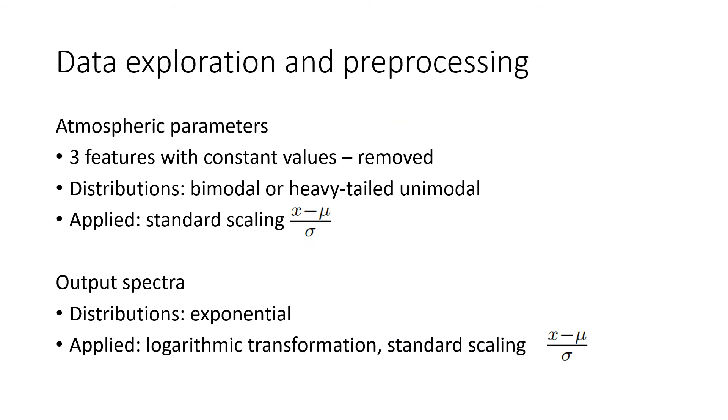In our initial exploration of the dataset, we noticed that three of the atmospheric parameters have constant values, which we removed. The remaining have distributions that are either bimodal or heavily tailed unimodal. We applied standard scaling to each of the attributes. On the side of the spectral data, the distributions are predominantly exponential, which is why we applied a logarithmic transformation followed by standard scaling. The data is still very high dimensional in both of the spaces, which is why we believed that methods of dimensionality reduction would be crucial to good predictive models.